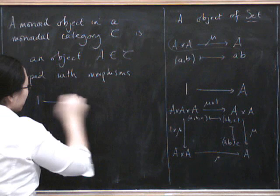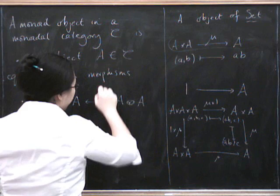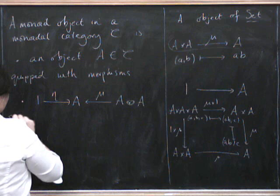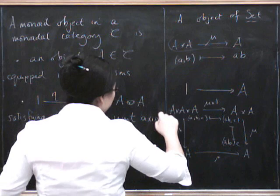1-cells, that is morphisms, those two morphisms. So we've got to have something from 1 to A called eta, and we've got to have something from A tensor A to A called mu. And then it's got to satisfy the two axioms satisfying associativity and unit axioms. Of course,